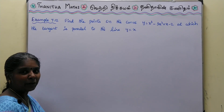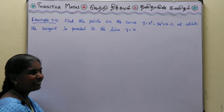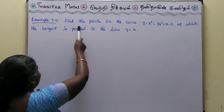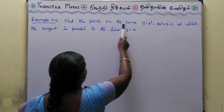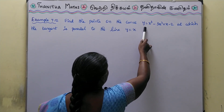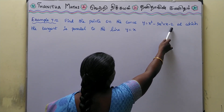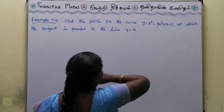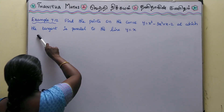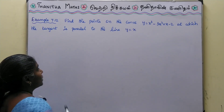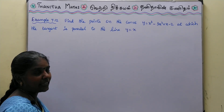Welcome friends, now we will talk about Example 7.12. Find the points on the curve y = x³ - 3x² + x - 2 at which the tangent is parallel to the line y = x.